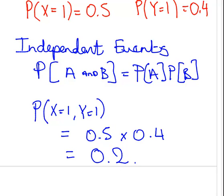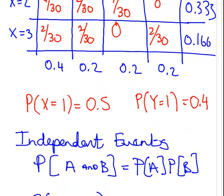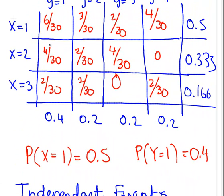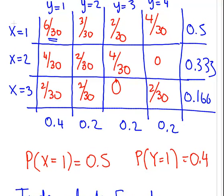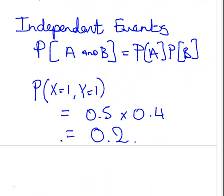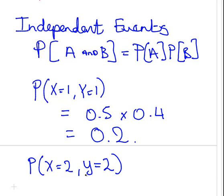That's what we'd expect if they are independent. Let's check back in our table to see if that's actually the case — and it's not 0.2. So that works as a check. But that's not enough; we'll have to check it in other places. Let's try the probability of X equal to 2 and Y equal to 2. If they are independent, that looks like 6 over 30.